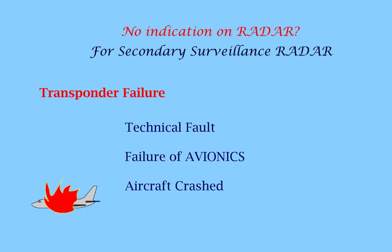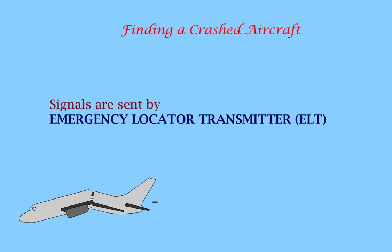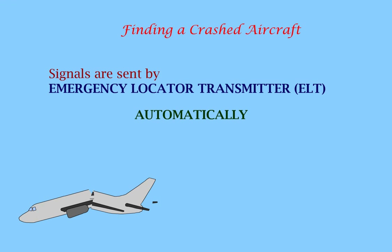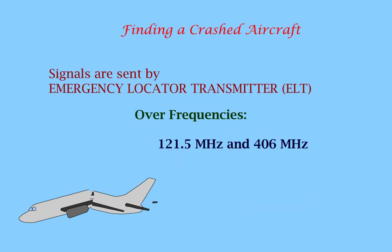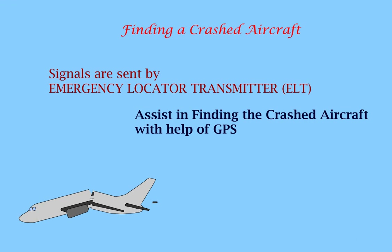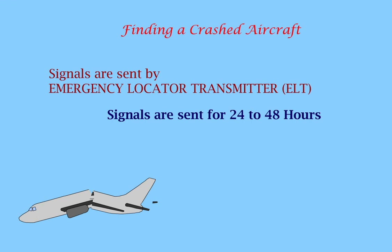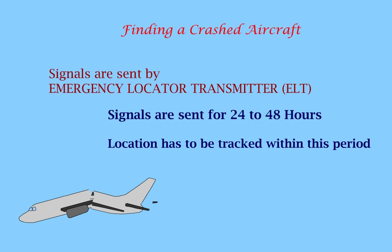In case of a transponder failure and the aircraft crashed, the aircraft can still be located based on signals sent by the emergency locator transmitter. These get activated automatically due to high g-force on impact or because of immersion in water. They can also be activated manually. The signals are sent over the frequencies 121.5 and 406 MHz. They assist in finding the crashed aircraft with the help of GPS for search and rescue. The signals are sent for 24 to 48 hours, which means the location has to be tracked within this period so that the aircraft doesn't go missing.